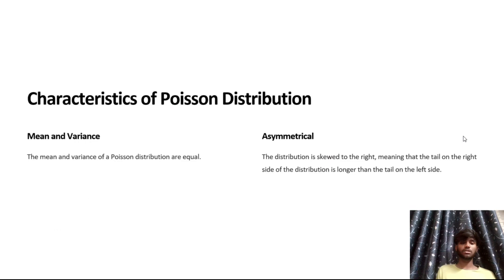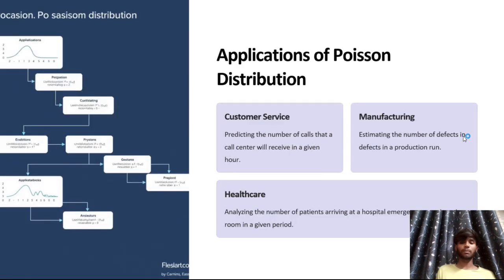Characteristics of a Poisson distribution include mean, variance, and asymmetry. The mean and variance of a Poisson distribution are equal. In terms of asymmetry, the distribution is skewed to the right, meaning that the tail on the right side of the distribution is longer than the tail on the left side.